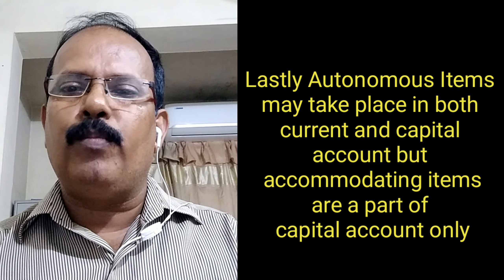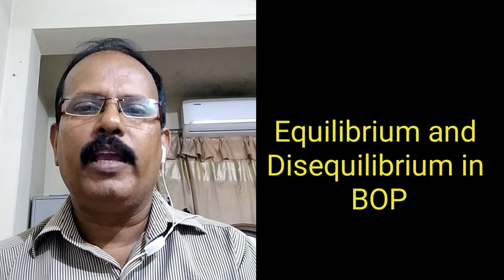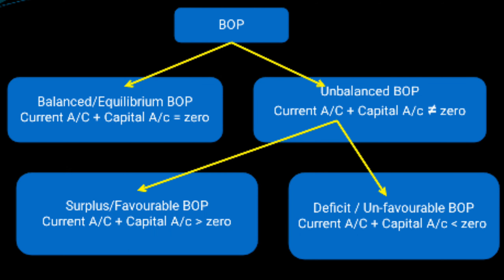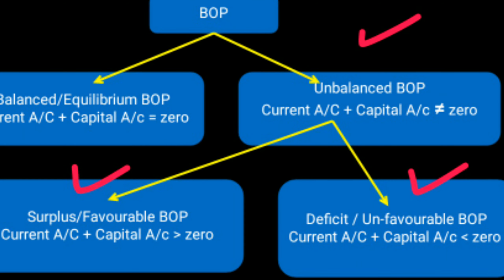The next topic is equilibrium and disequilibrium in BOP. BOP may be balanced or unbalanced. Balanced means receipts equal to payments, which can also be defined as current account balance plus capital account balance equal to zero — this is equilibrium BOP. If it is not equal to zero, then it is unbalanced or disequilibrium. Unbalanced BOP may further be of two types: surplus or favorable BOP, and deficit or unfavorable BOP.